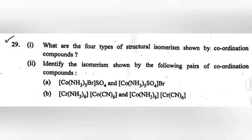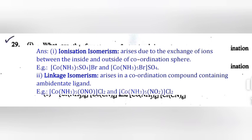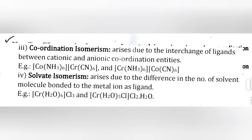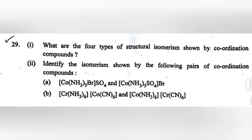Question 29, Part 1: What are the four types of structural isomerism shown by coordination compounds? Answer: 1. Ionization isomerism arises due to the exchange of ions between inside and outside of the coordination sphere. 2. Linkage isomerism arises in coordination compounds containing ambidentate ligands. 3. Coordination isomerism arises due to the interchange of ligands between cationic and anionic coordination entities. 4. Solvate isomerism arises due to the difference in the number of solvent molecules bonded to the metal ion as ligand. Part 5: Identify the isomerism shown by the following pairs: Answer A. Ionization isomerism. B. Coordinate isomerism.